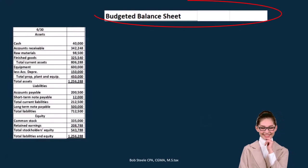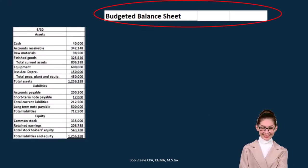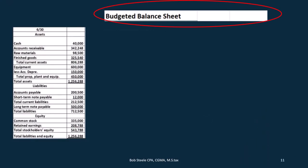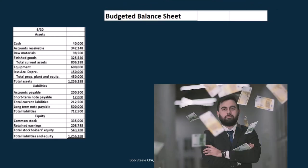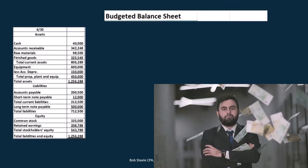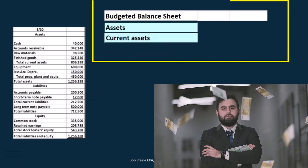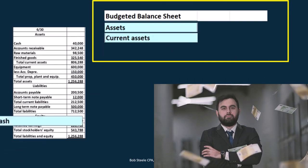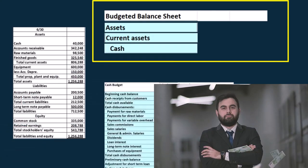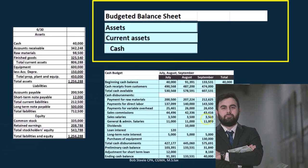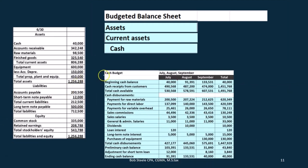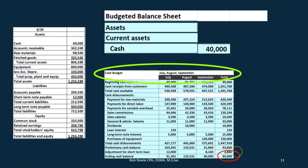So the balance sheet at the end of our budgeted time period — where do we stand after this time period that we are budgeting for, once this quarter has ended? That's what we're looking at. We're going to have the assets, starting with current assets. We'll start off with cash, which will be coming from the cash budget — we have the $40,000.